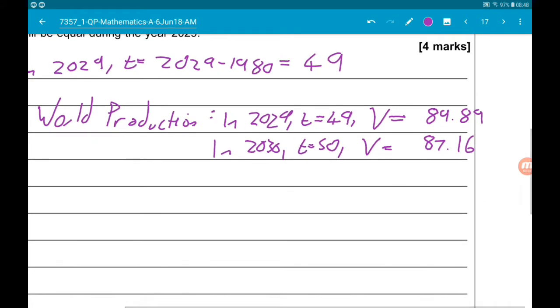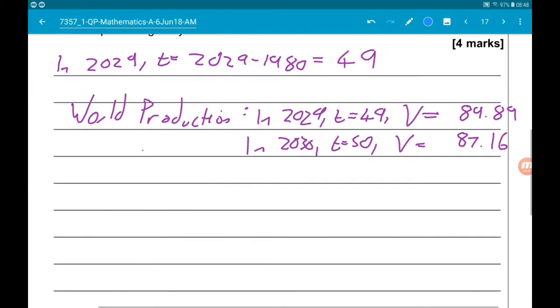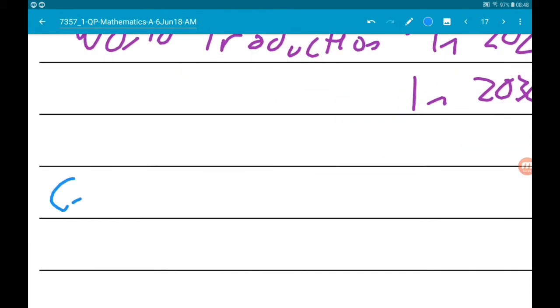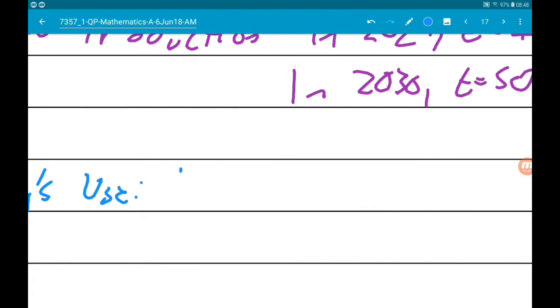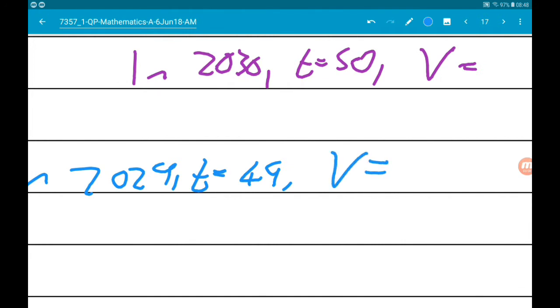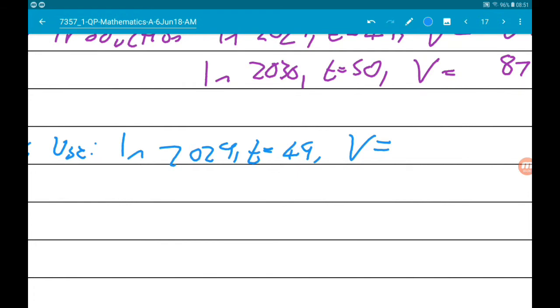Okay, so now let's do the same for the use of oil, so the country's use. So in 2029, T is 49, and V is, putting T equals 49 into the formula above, we get V is 89.81. And then in 2030, T is 50, and V is 95.47.